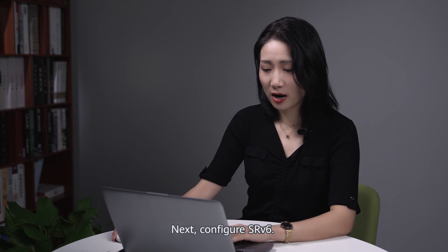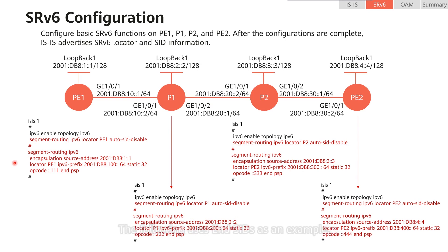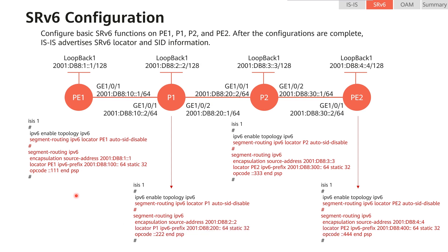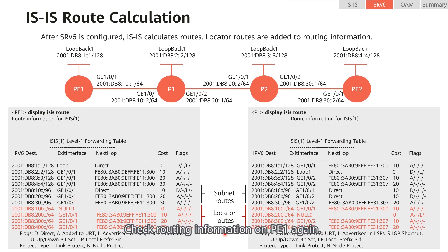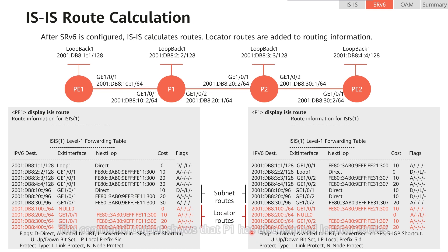Next, configure SRV6, including enabling IS-IS SRV6, configuring SRV6 functions, and allocating SIDs. The following uses End SIDs as an example. After the configurations are complete, IS-IS advertises the SRV6 locator and SID information. Checking routing information on P1 again shows that locator routes are added to the IS-IS routing table after SRV6 is enabled. Checking the IS-IS routing table on P1 confirms that P1 has also learned the locator routes.